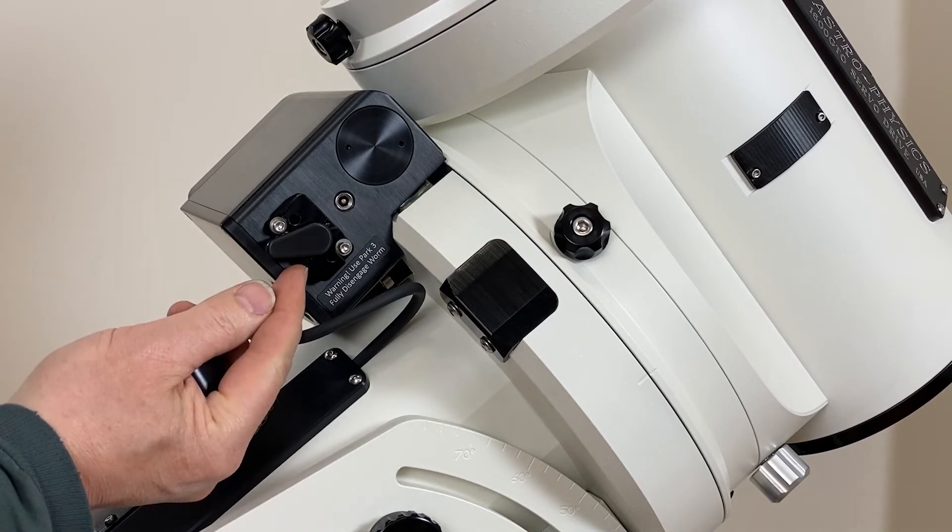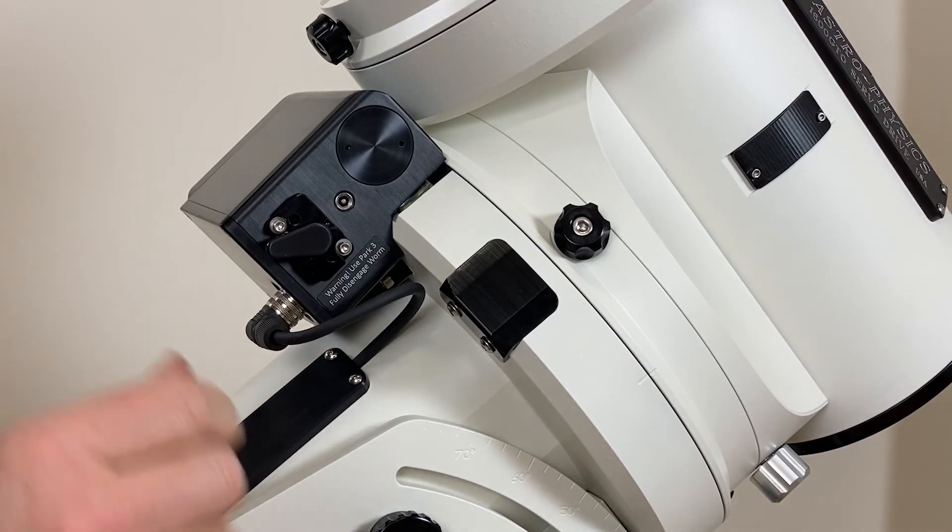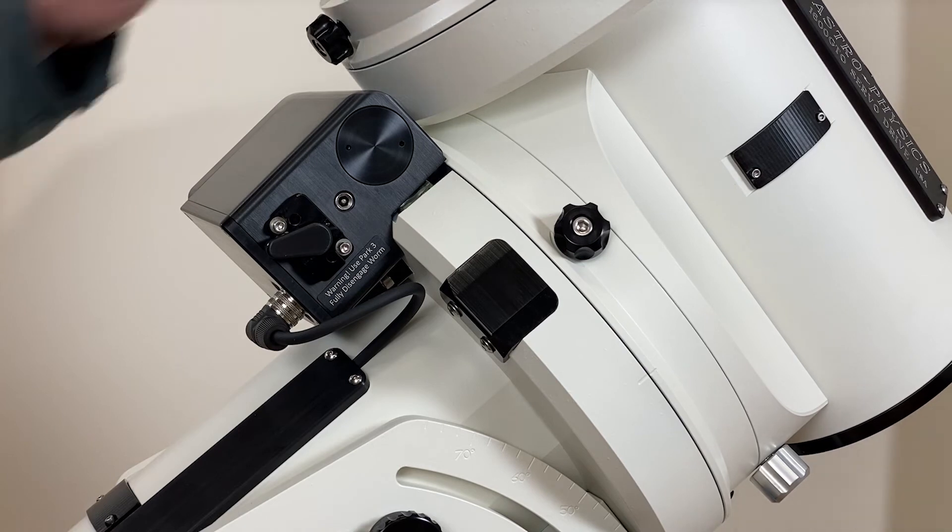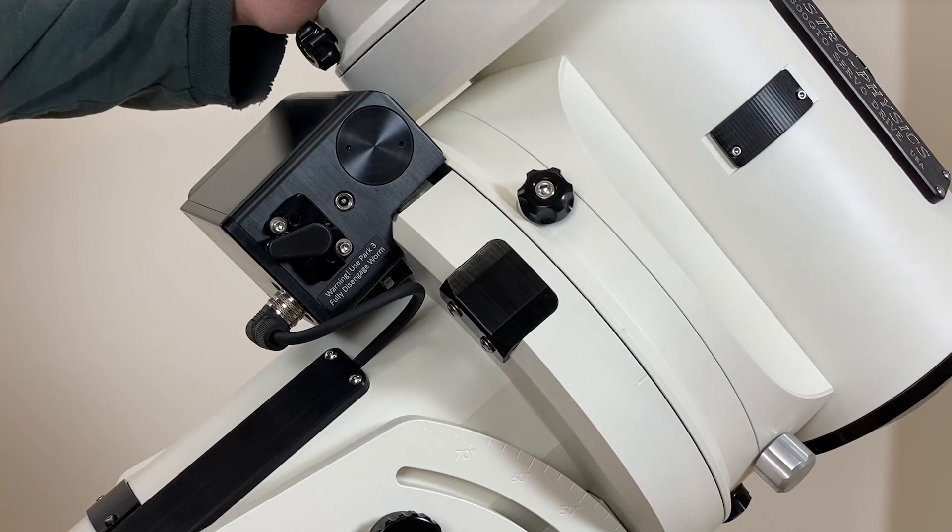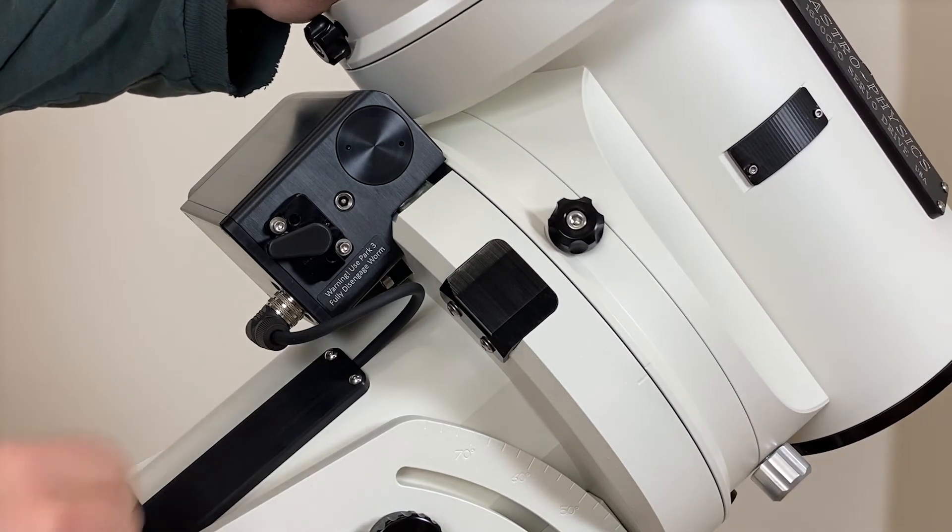The fully open position may have different placement on different mount models. Once the cam knob is in the fully open position and your gears are disengaged, the axis should move freely with absolutely no contact between the worm wheel and worm screw.